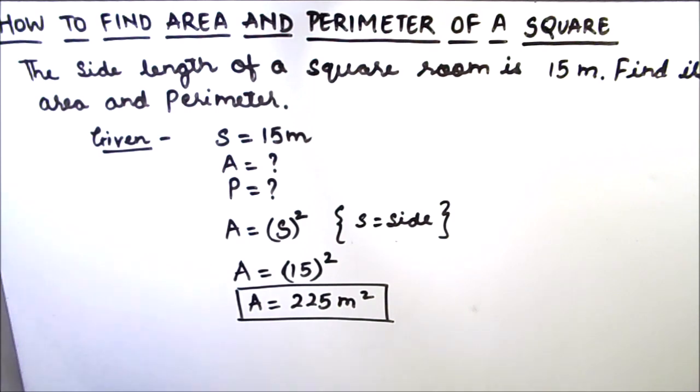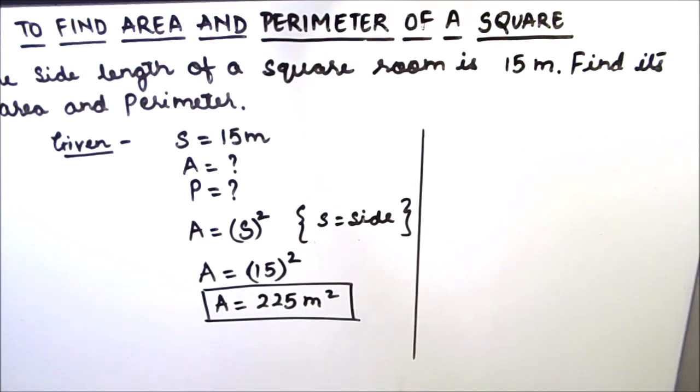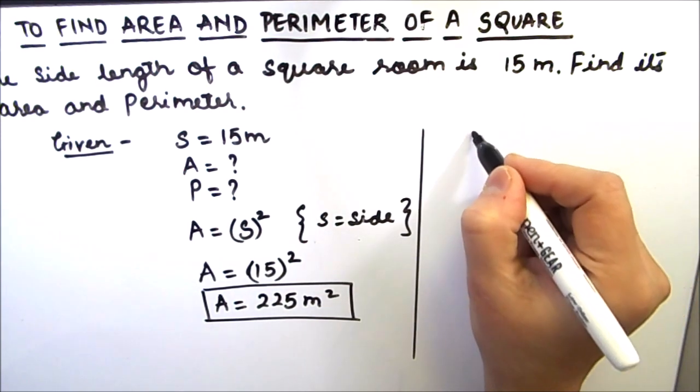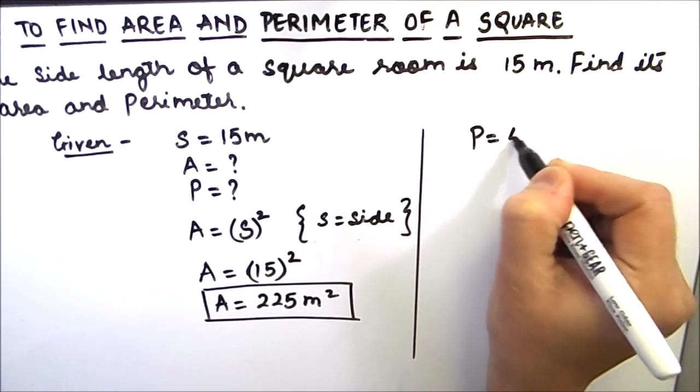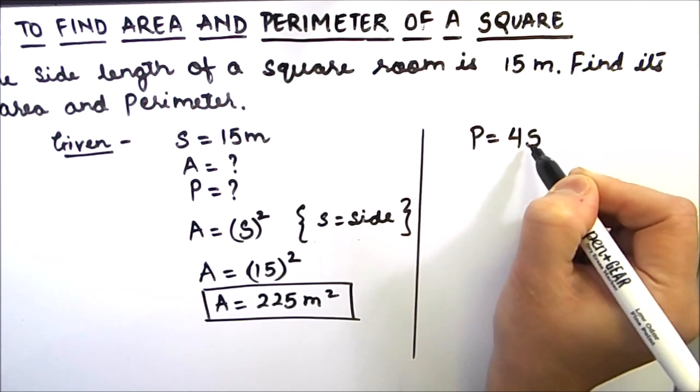Now we will find the perimeter of the square. In my earlier videos on perimeter, I have already shown you that perimeter of a square is 4 times side length.